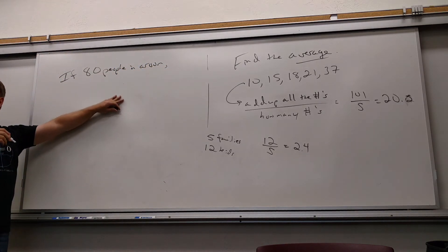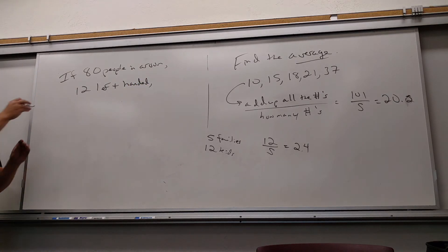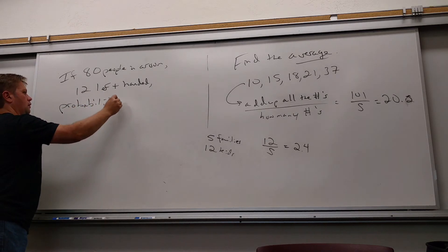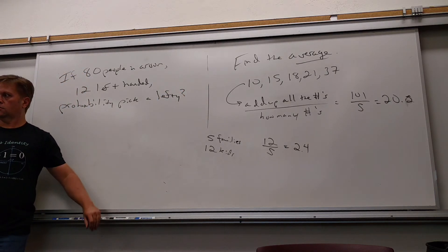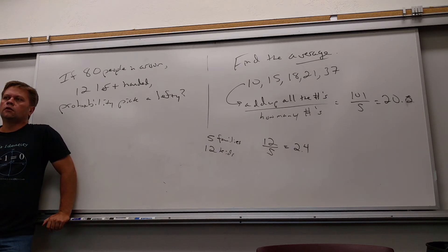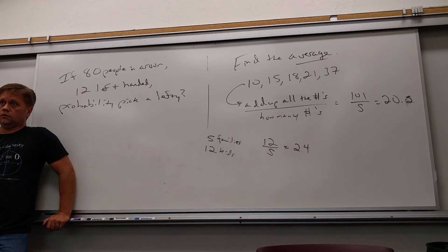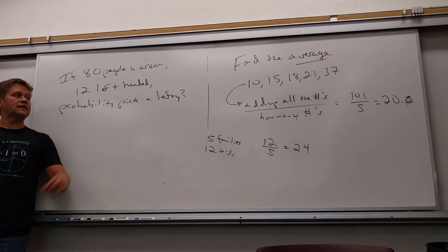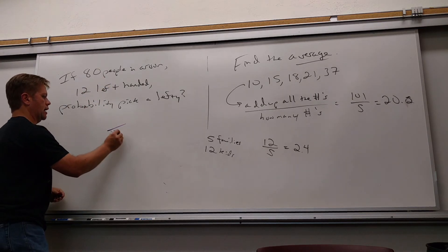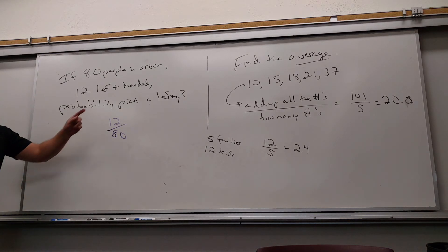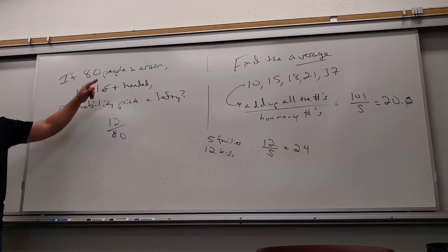Last little thing here. There's 80 people in a room and 12 are left-handed. What's the probability I would pick a left-handed person? How do you calculate it? Don't tell me the answer, tell me what work you would do. Divide it. Divide what by what? Divide that 12 by 80. I love it. 12 divided by 80. Why? Because out of 80 people, how many chances do you have to pick a left-handed person? 12. So exactly the way you would say it. Out of 80, I have 12 chances out of 80.